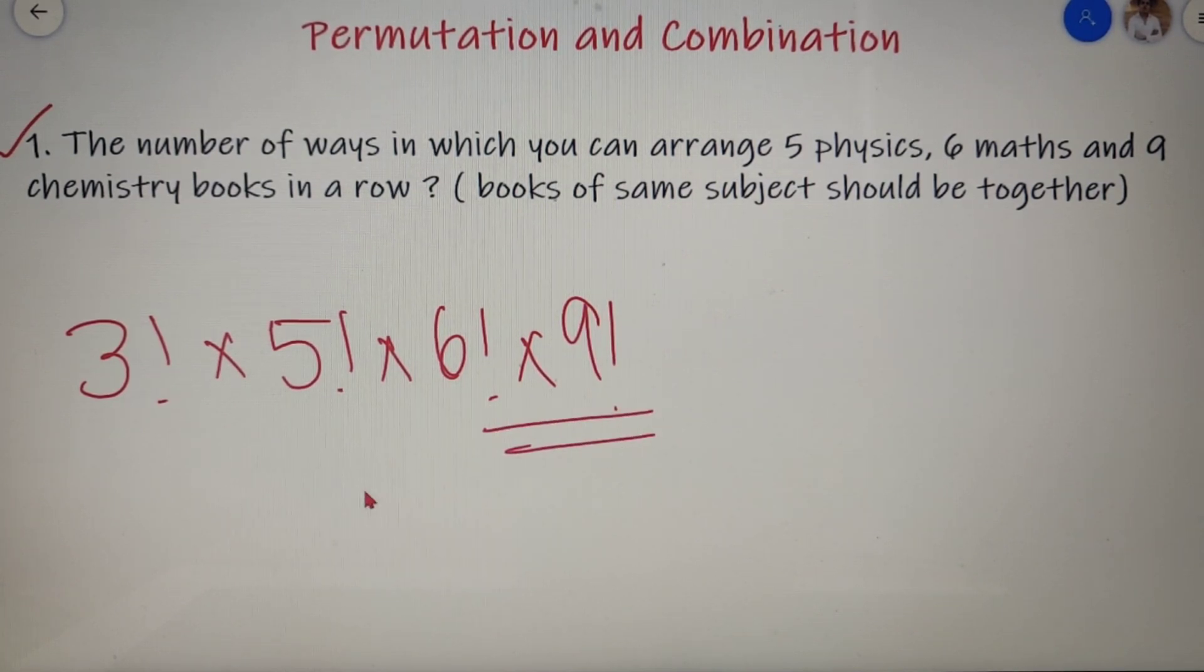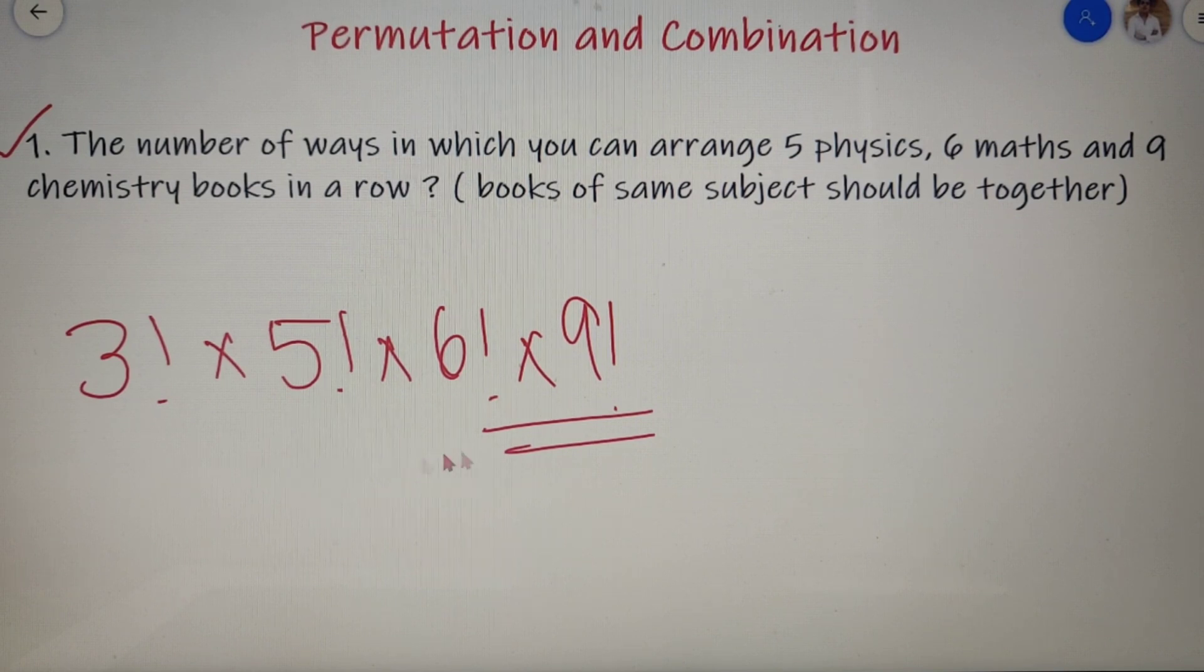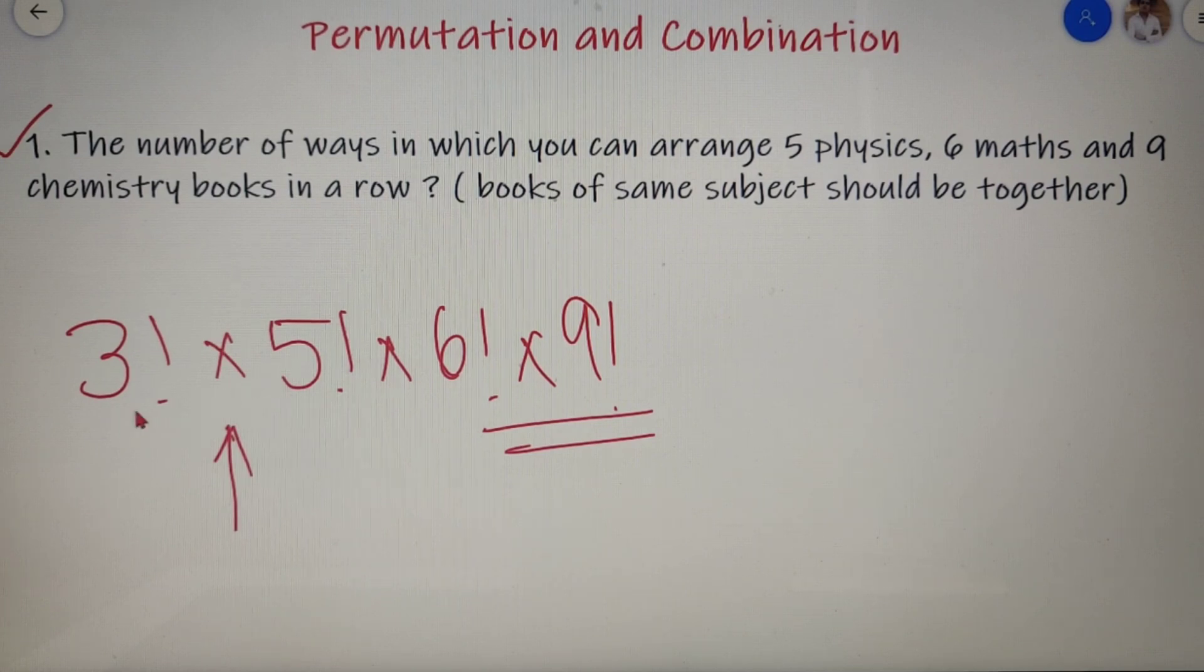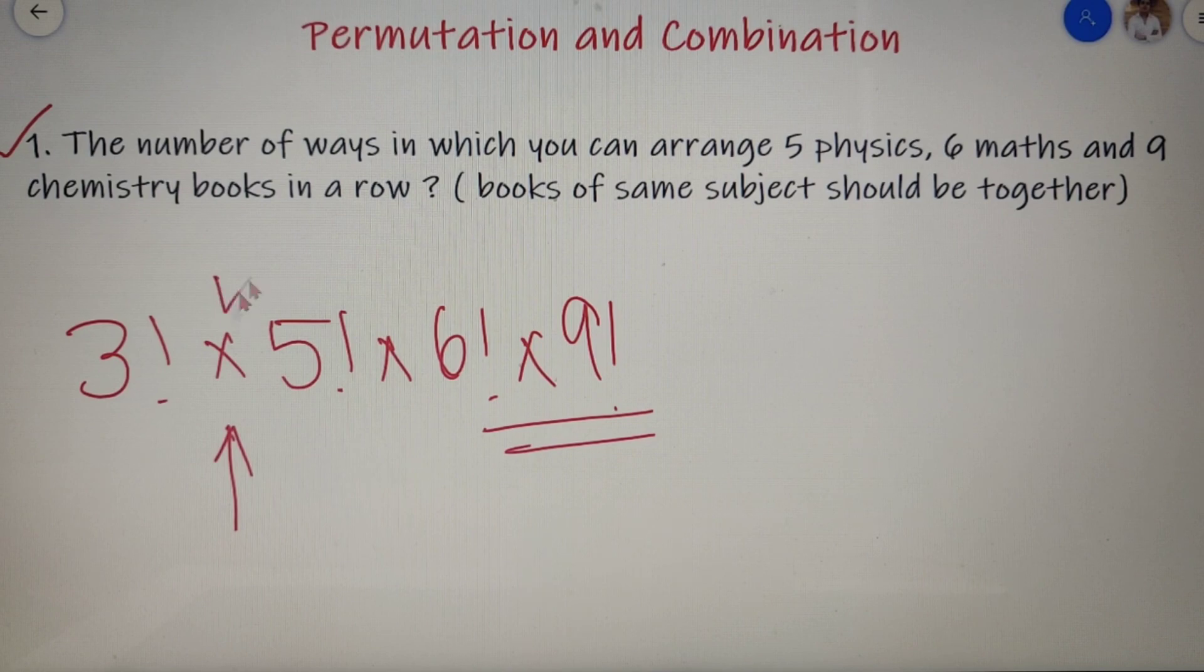Now if I confuse that why I have applied the multiplication sign between the numbers, then I have used the multiplication rule which says that if two events are dependent on each other then the multiplication sign comes in between. And since arranging the books of different subjects were dependent on each other, that's why we apply the law of multiplication.